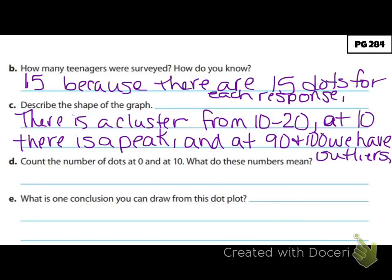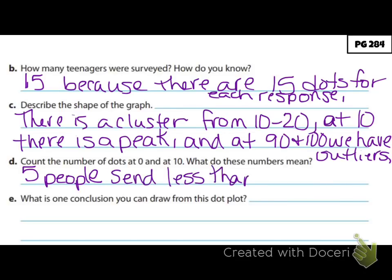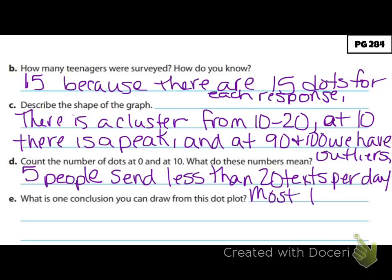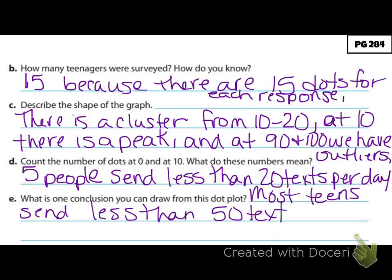D says count the number of dots at 0 and at 10 — what do these numbers mean? If we count the numbers at 0 and 10, we count that we have 5 people, and that means that 5 people send less than 20 texts per day. E asks what is one conclusion you can draw from this dot plot. Looking at all our data in general, we can say that most teens send fewer than 50 texts per day.